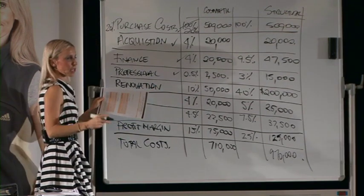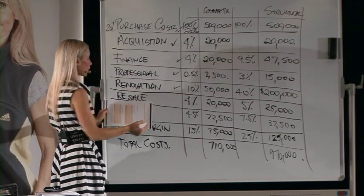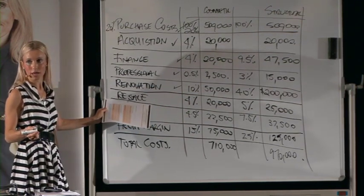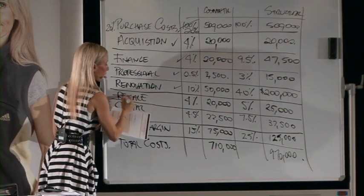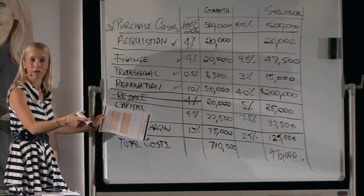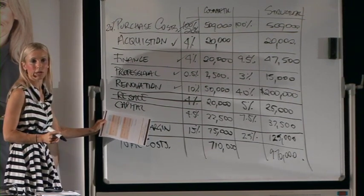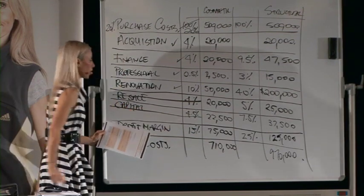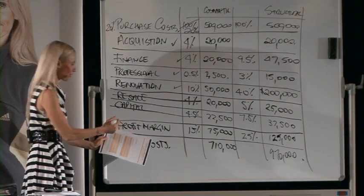Your renovation costs — the actual money to fund the reno — coming out during the project. Now, your resale costs — your agent's commission and marketing fees — are they a cost that comes out during or after? After. So you don't have to worry about that one, because you can pay those agent's commissions and marketing when the property settles on payday. Your capital gains tax — during or after? After. So you don't have to worry about that either. Your profit margin — during or after? After. You're the last one to be paid in the deal.